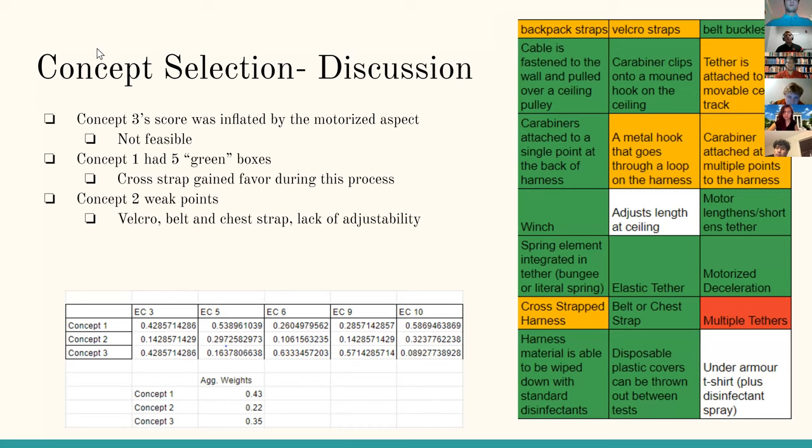So when it comes to the discussion of the AHP, it's important to note that even though the scores between concept 1 and 3 were very close, concept 3's score was almost inflated. The motorized aspect in theory sounds really good to shorten or lengthen the tether and make sure to decelerate. And this is why the strength of tether/harness EC scored so highly.